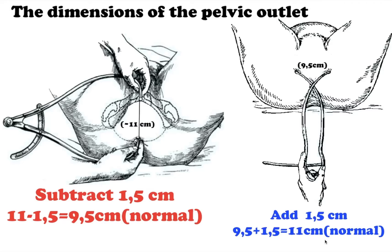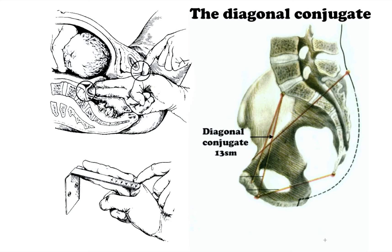Now let's measure the diagonal conjugate, which is the distance from the inferior margin of the symphysis to the most protruding point of the sacral bone promontory.